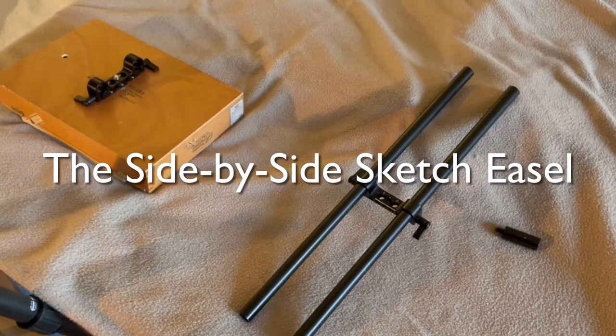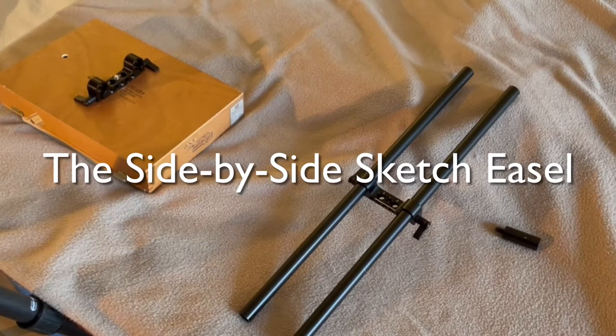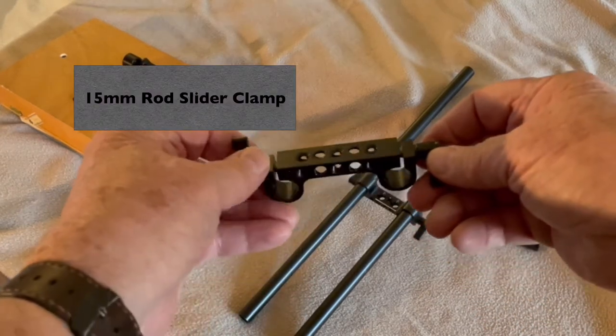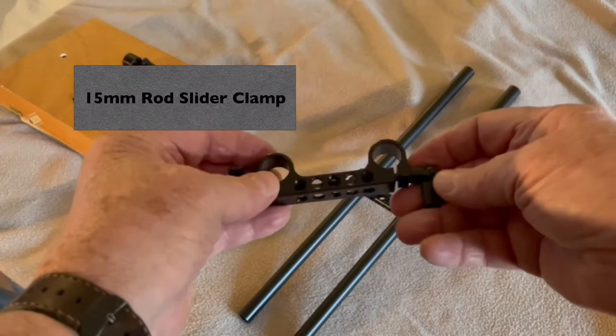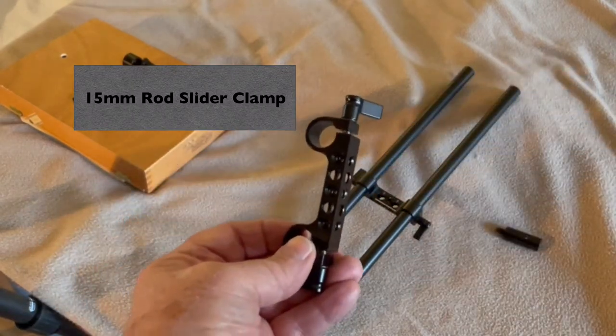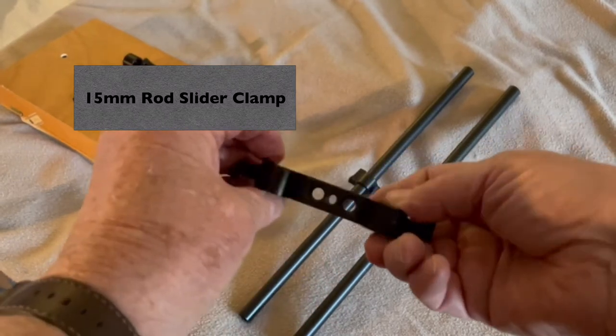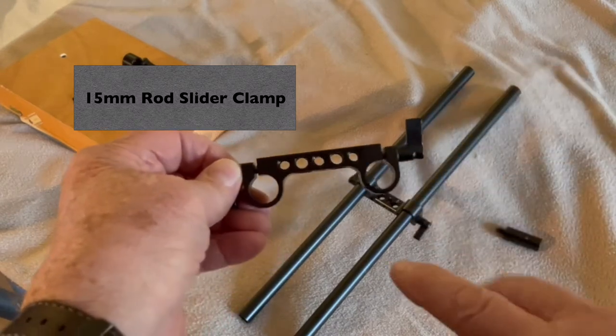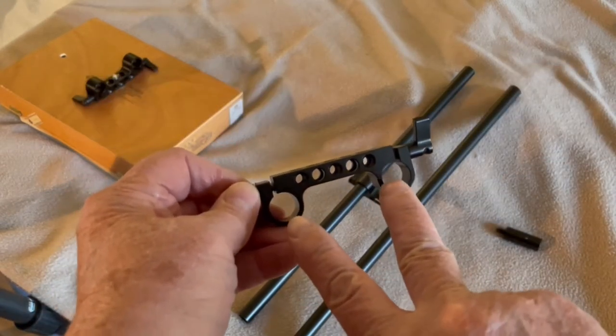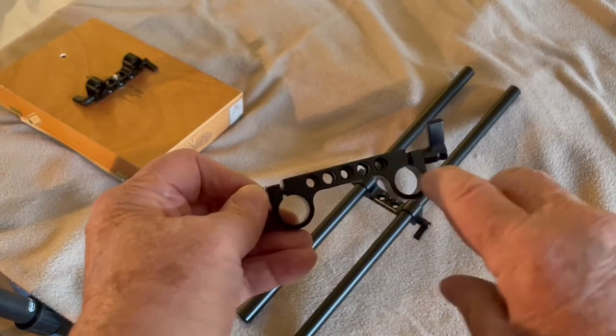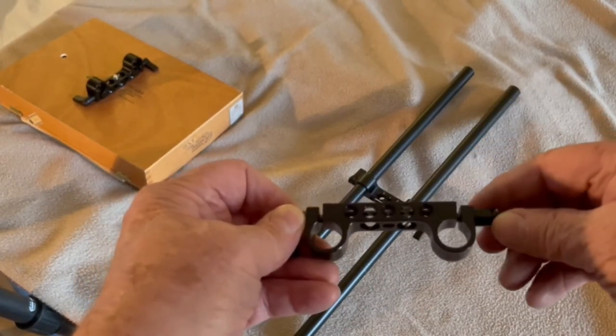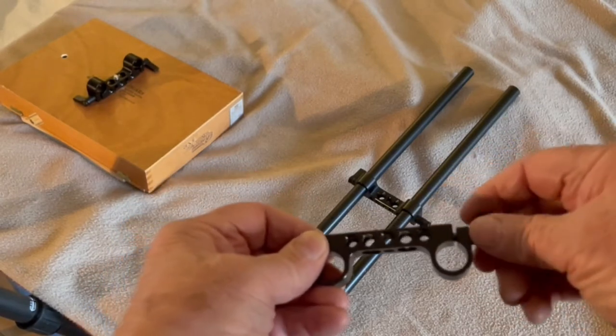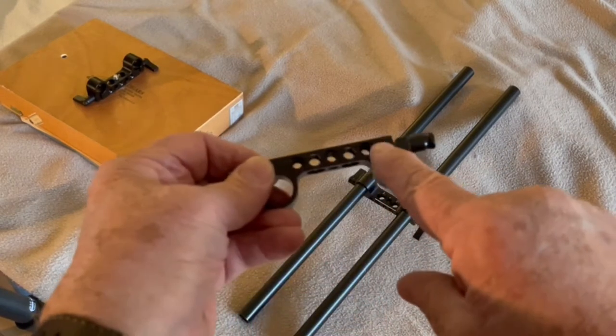The key component of the side-by-side sketch easel is the slider clamp. This is the slider clamp and it has two holes which are tightened and loosened by these small levers and which are fitted to this bar in between here.